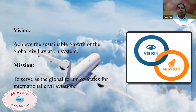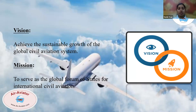ICAO has a vision and a mission. Its vision: ICAO is a specialized agency headquartered in Montreal, Canada. It establishes the principles and techniques of international air navigation and fosters the planning and development of international air transport to ensure safety and growth.